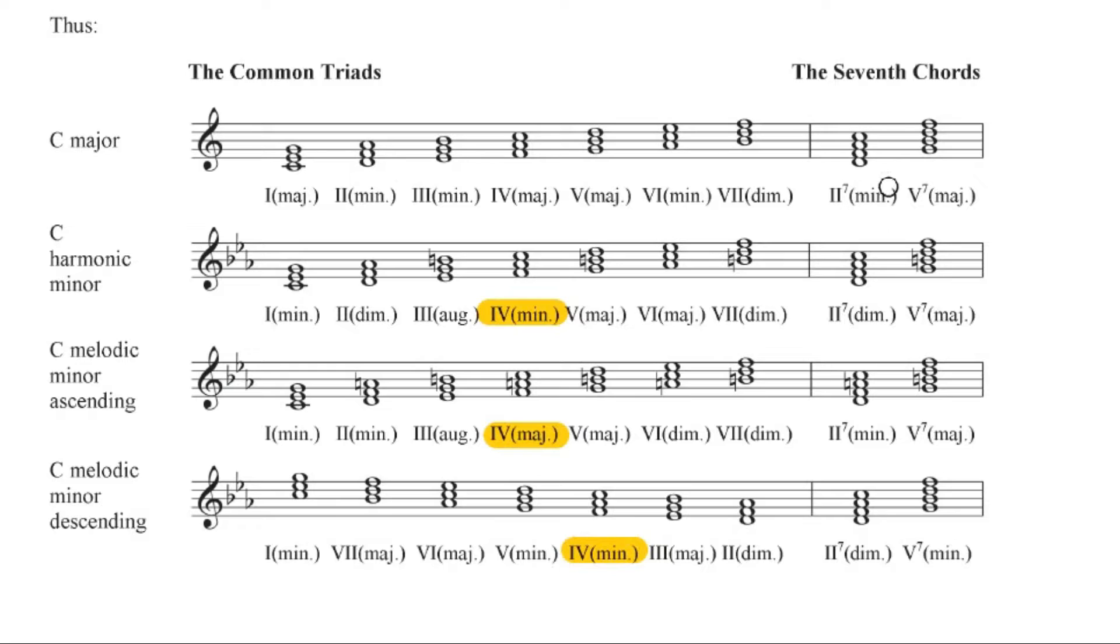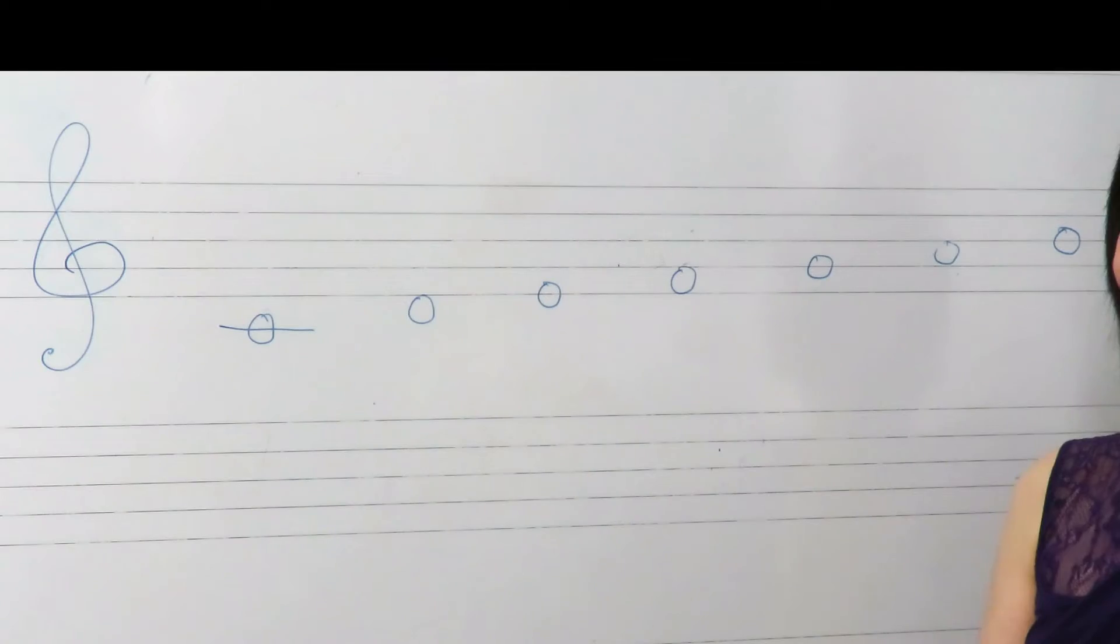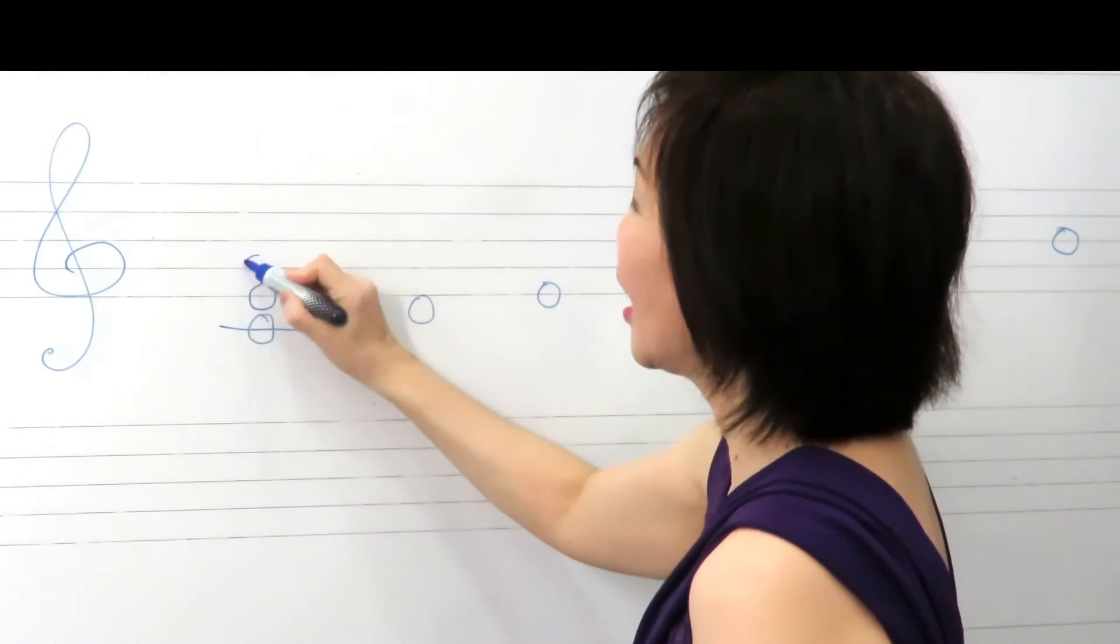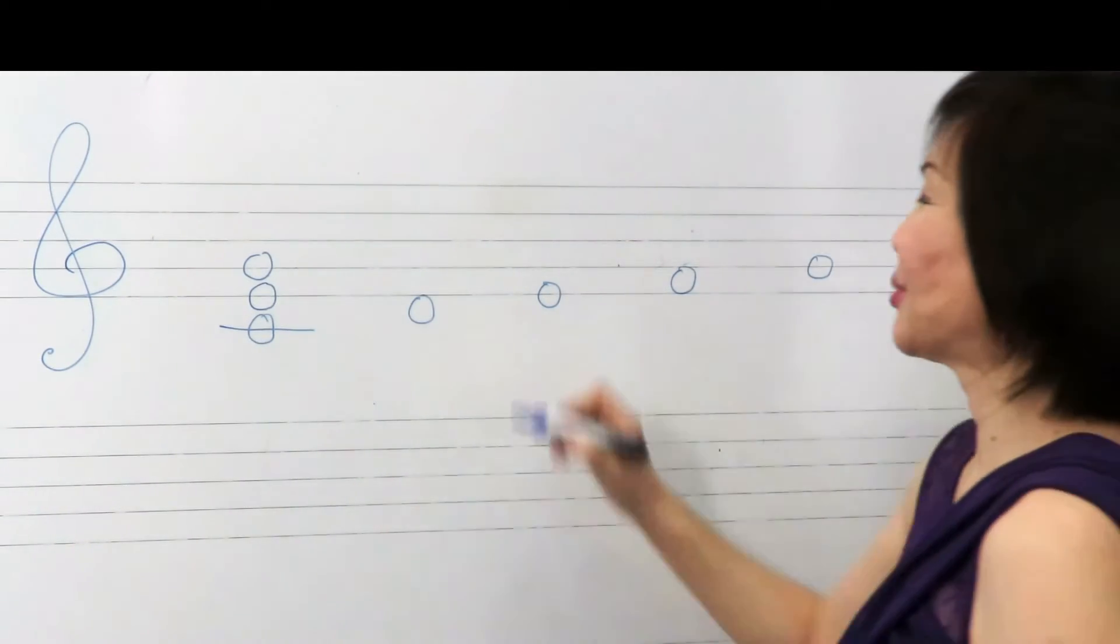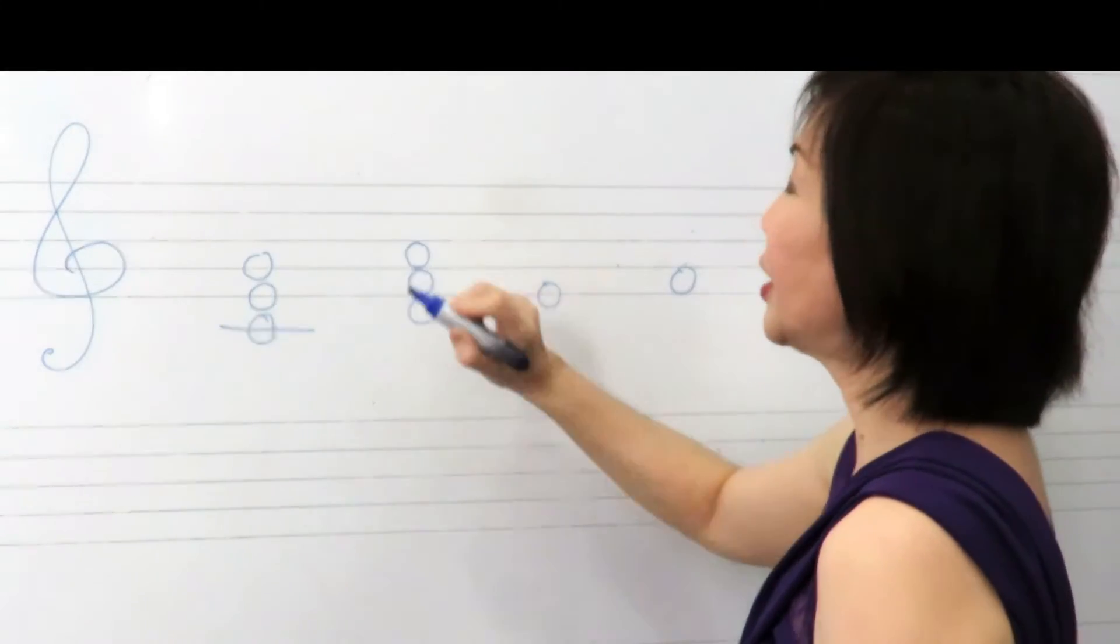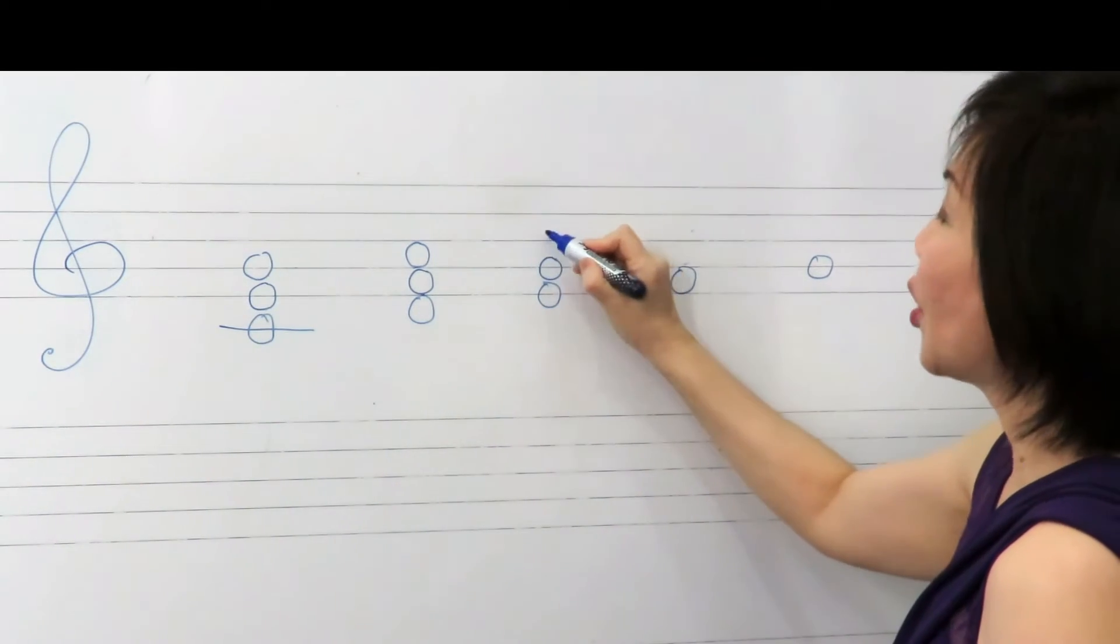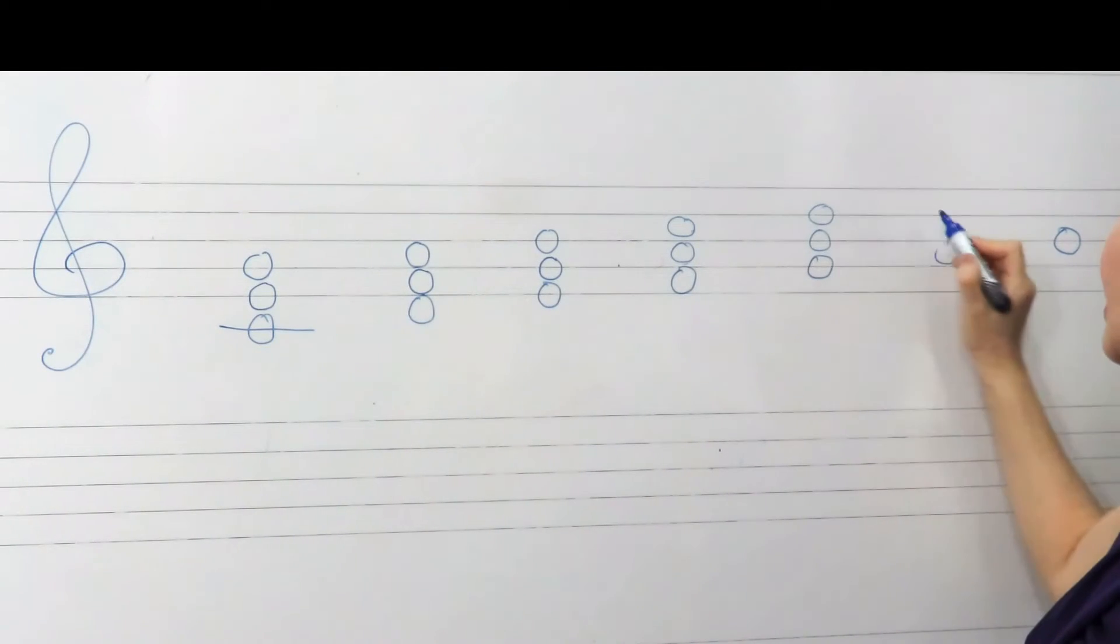Interestingly, for seventh chords, seven is written as a superscript next to the Roman numeral. Let us now look at the scale of C major. On top of each of these notes, we can put two notes above the tonic note to make a tonic triad, above the supertonic note to make a supertonic triad, then the mediant triad, subdominant triad, dominant triad, submediant triad, and a leading tone triad.